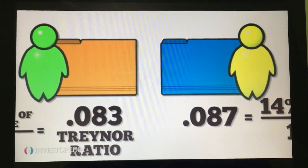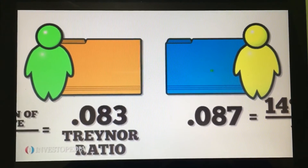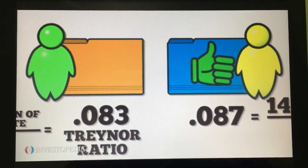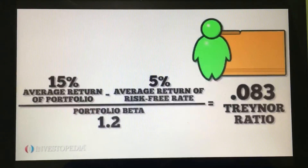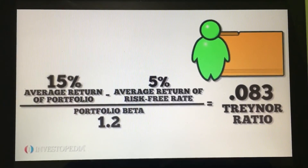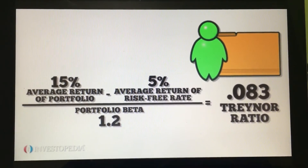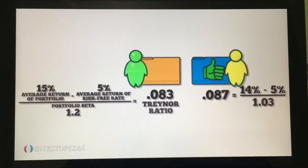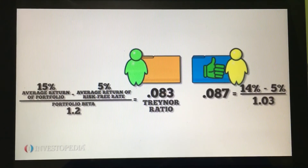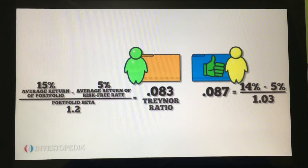A higher Treynor value means the portfolio has a better risk-adjusted return. Even though the first portfolio had a higher return, its outcome was not as impressive as the second portfolio once you consider the risks the manager took to achieve his returns.